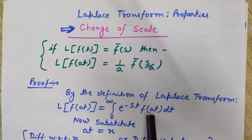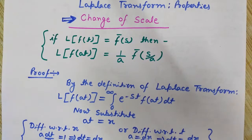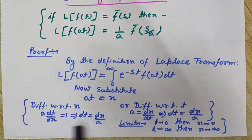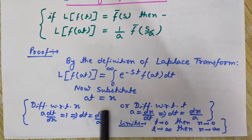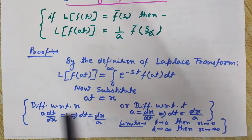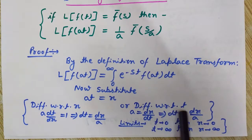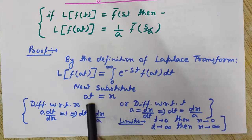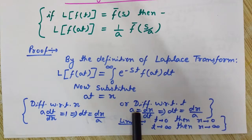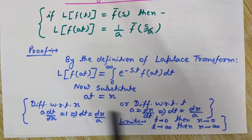Now we will substitute a*t by x. We will differentiate with respect to x — here t and x are the variable parameters. Differentiating gives: a * dt/dx = 1, so dt = dx/a. Alternatively, differentiating with respect to t: the differentiation of a*t with respect to t is a, which equals dx/dt, so from this also we get dt = dx/a.